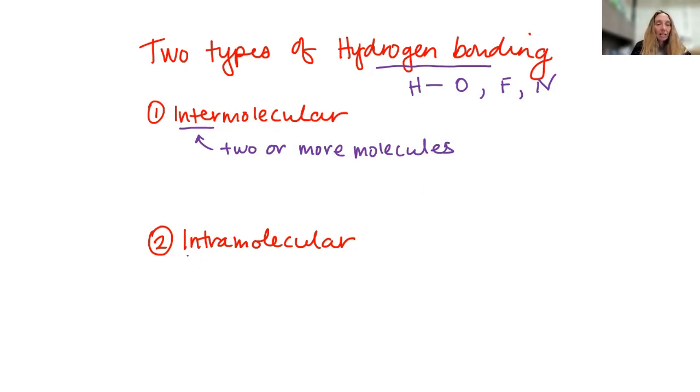The second type is intramolecular. Intramolecular means that the hydrogen bonding that takes place happens within the same molecule. So let's look at an example of these two.